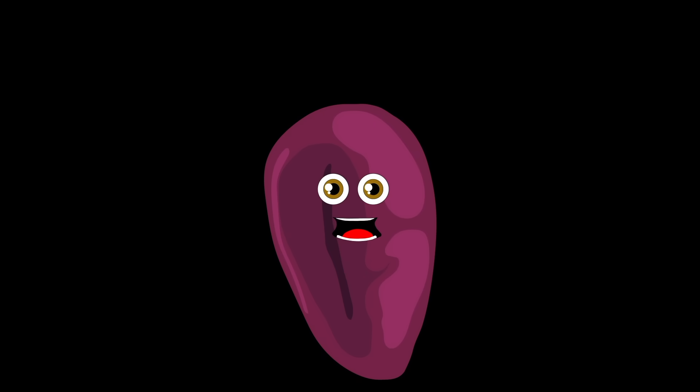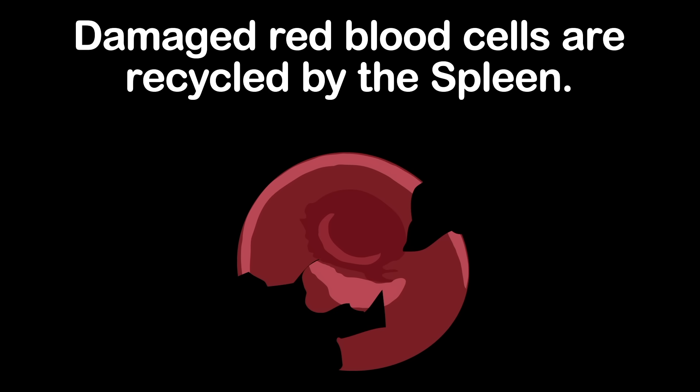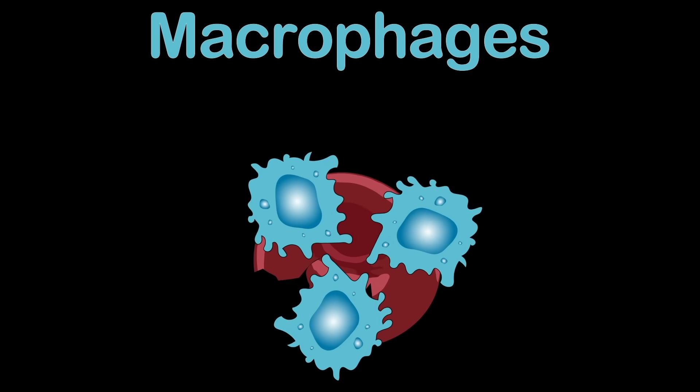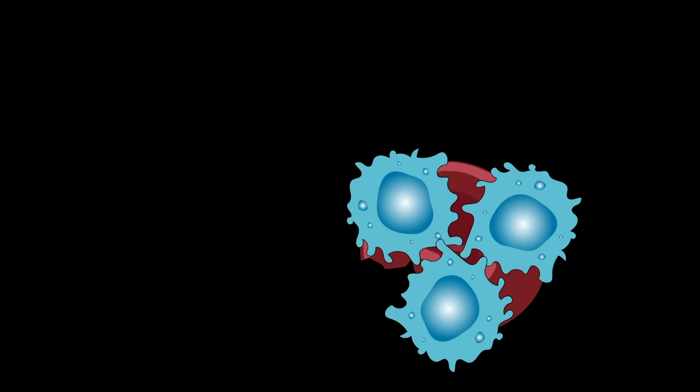All the functions of your spleen are really complex, but I'll explain the basic functions in the next few steps. Red blood cells last 120 days, delivering oxygen to your body. When they're damaged and entering the spleen, recycled is what they'll be. Healthy cells flow through, but those that are in their unhealthy stages are broken down by large white blood cells called macrophages.